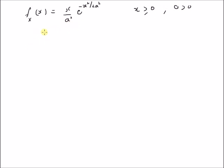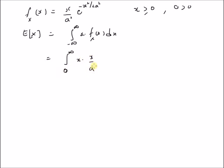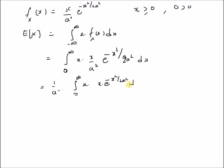This is the Rayleigh distribution. Now we want to find the mean of this distribution — the expectation of x — defined by the integral from minus infinity to plus infinity of x · f_X(x) dx. Using the definition, we have the integral from 0 to infinity of x · (x / a²) · e^(−x² / 2a²) dx, which becomes (1/a²) · integral from 0 to infinity of x² · e^(−x² / 2a²) dx.